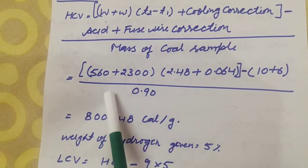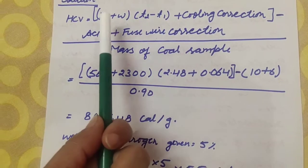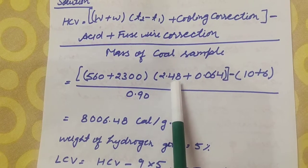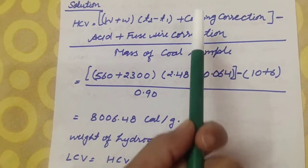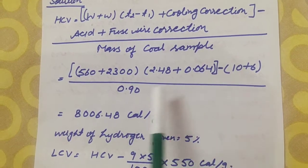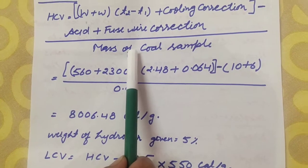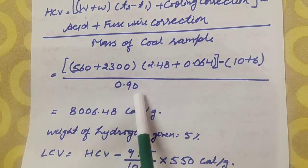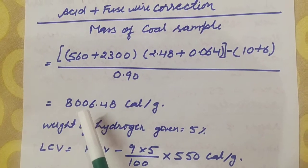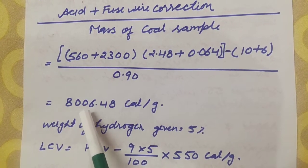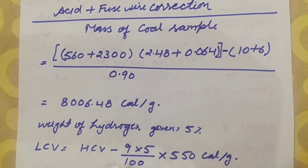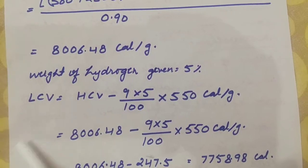Putting in the values: W = 2300, w = 560, T2 − T1 = 2.48, cooling correction = 0.064, fuse wire correction = 10 calories, acid correction = 6 calories, and mass of coal sample = 0.90 gram. Solving the whole expression gives the higher calorific value as 8006.48 calories per gram.